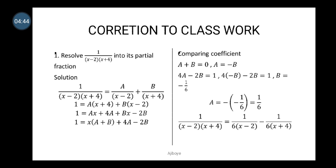Substituting into the second equation gives 4(minus b) minus 2b equals 1. Opening the bracket: minus 4b minus 2b equals 1, which is minus 6b equals 1. Dividing both sides by minus 6, b equals minus 1 over 6.